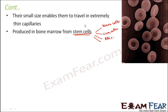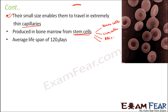Quantity wise, there are a lot of RBCs present in our body, but they are very small in size. This small size enables them to travel through extremely thin capillaries - the thin tube-like structures inside our body through which blood flows. They have an average lifespan of 120 days, after which they die.